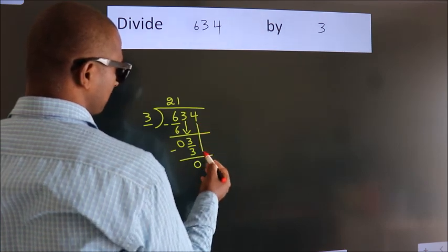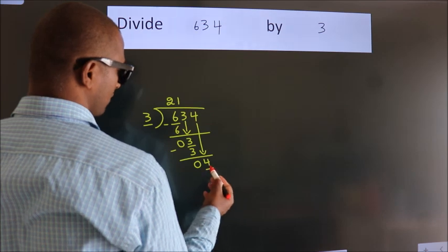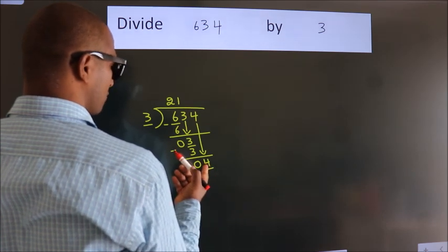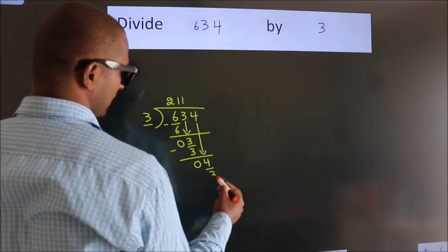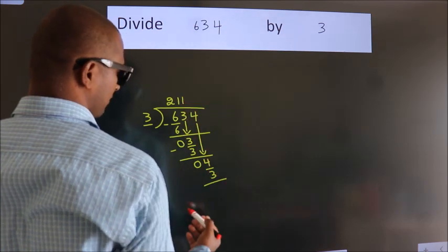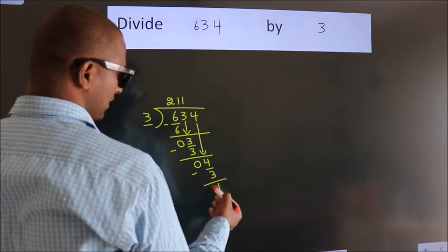After this, bring down the beside number. So, 4 down. A number close to 4 in the 3 table is 3 times 1, which is 3. Now we subtract, we get 1.